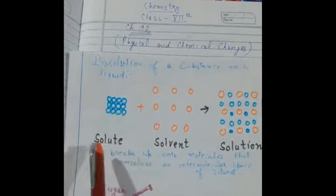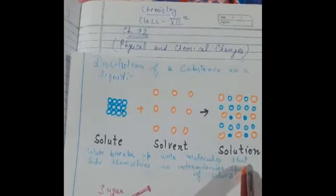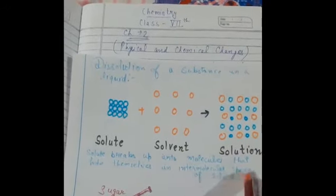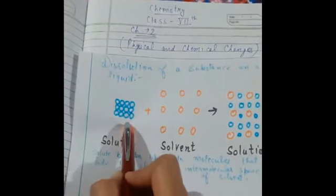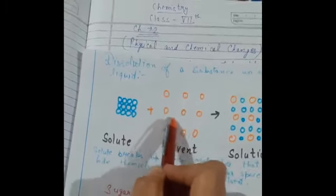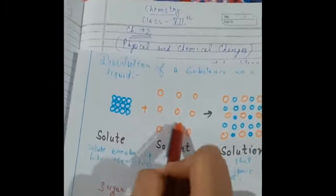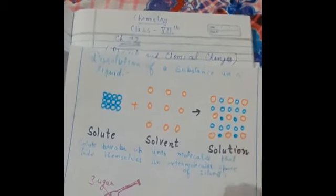What happens when you try to dissolve solute into the solvent? Solute breaks up into molecules that hide themselves in the intermolecular space of solvent. The solute particles would firstly break down and then they would occupy the intermolecular space present in between the particles of solvent, and then the solution would be made.